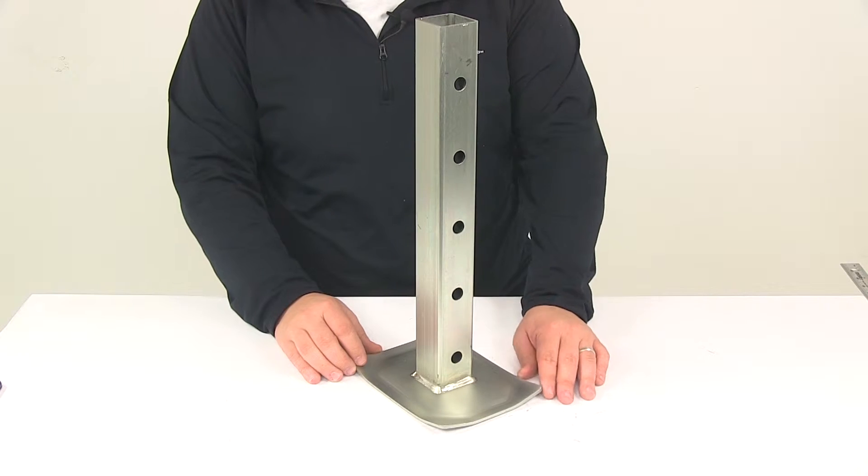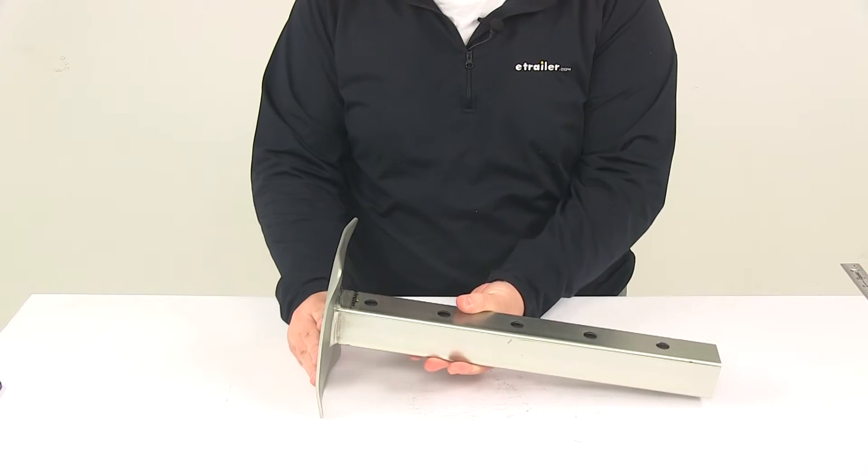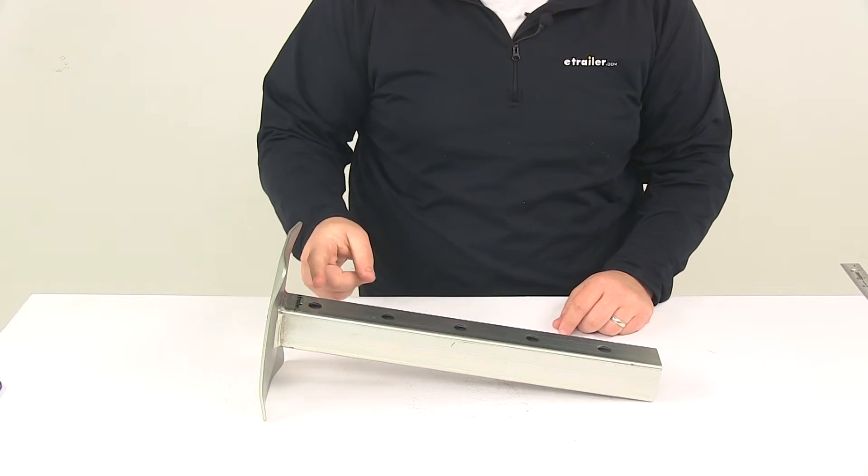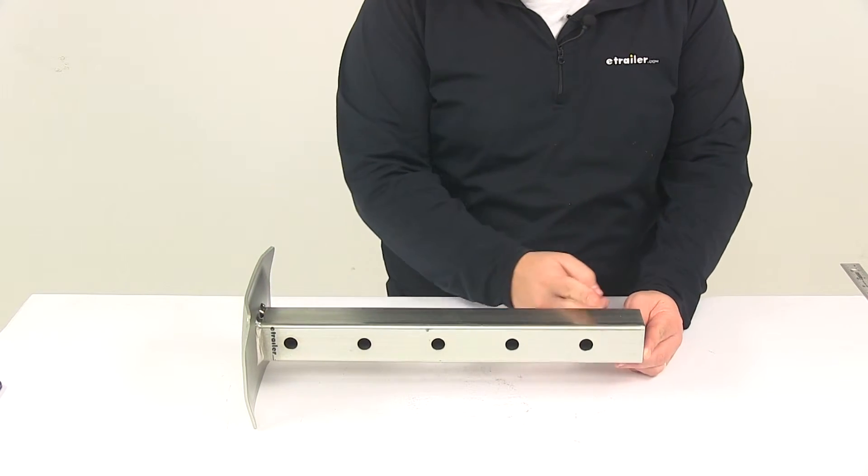The drop leg offers an additional 13 and a half inches of travel. We can tell that by taking a measurement from the center of this hole to the center of this hole.